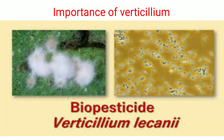Hello students, today we are going to learn about the important characteristics of different biopesticides. For example, entomopathogenic fungi like Verticillium, Paecilomyces, Hirsutella, and Metarhizium. We will discuss the characteristics of each and every entomopathogenic fungus. Let us first see the importance and important characteristics of Verticillium.